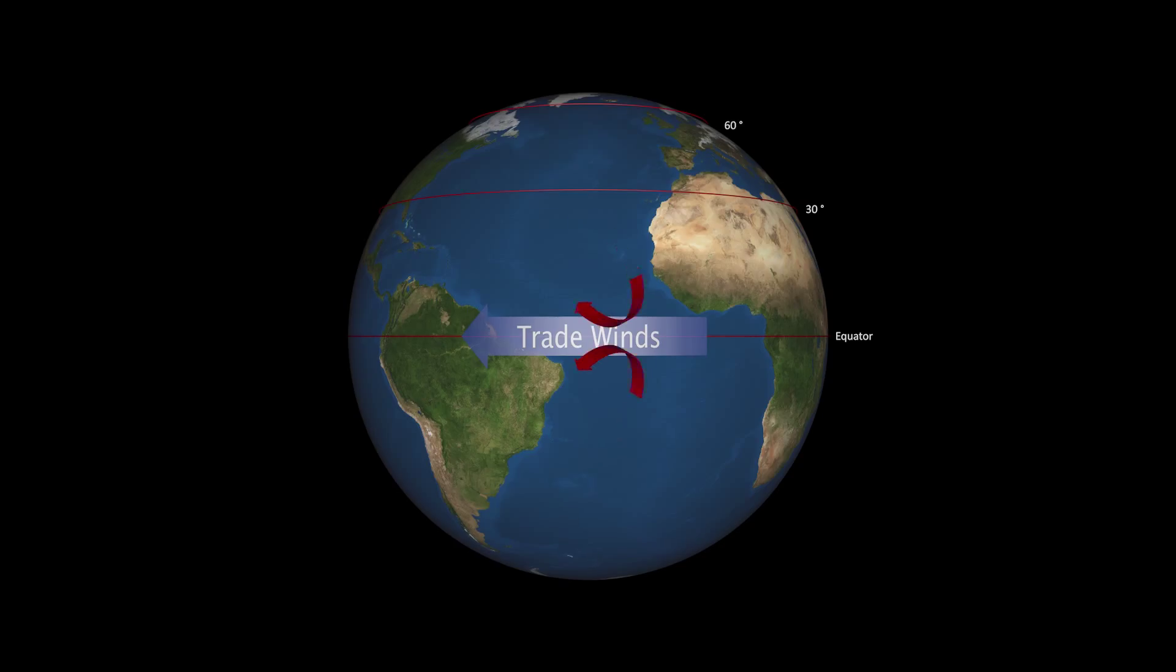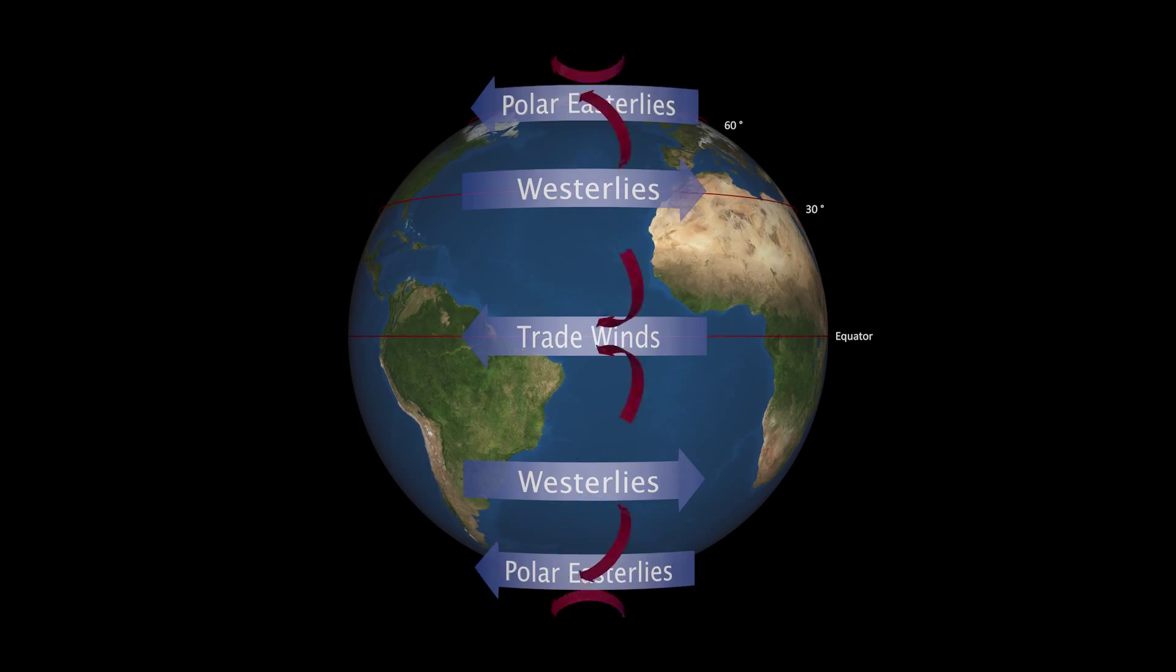Additional convection cells are formed at higher latitudes. At mid-latitudes, the Ferrell cell is responsible for the westerlies. These winds are directed towards the east. Near the poles, the polar cell creates the polar easterlies, with winds directed to the west.